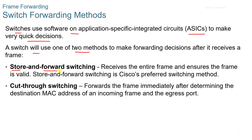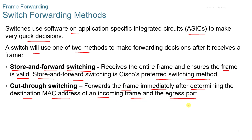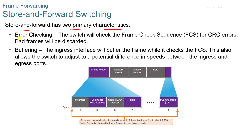A switch uses one of two methods to make a forwarding decision after receiving a frame. The first is store and forward switching, which receives the entire frame and ensures it is valid. Store and forward is Cisco's preferred switching method. It has two primary characteristics: error checking, where the switch checks the frame check sequence or FCS for CRC errors and discards bad frames; and buffering, where the ingress interface buffers the frame while checking the FCS, also allowing the switch to handle speed differences between ingress and egress ports.